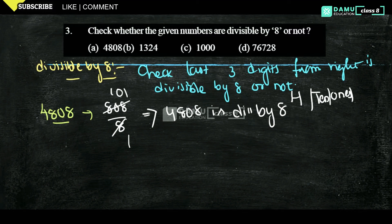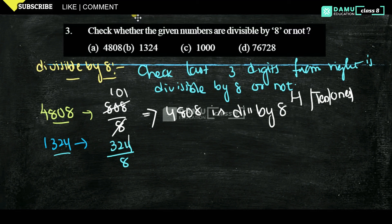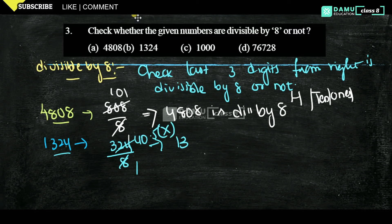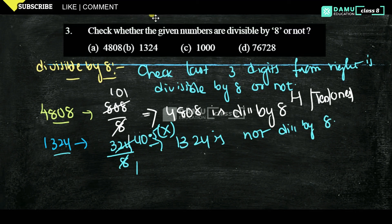The next one is 1324. The last three digits are 3, 2, 4. So we check: is 324 divisible by 8 or not? No, it is not divisible by 8. When we divide, we get a decimal result — we should not get decimals. You should get a remainder of 0, using integers only. Therefore, 1324 is not divisible by 8. You should get an integer, not a decimal number.